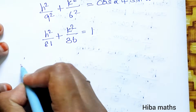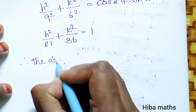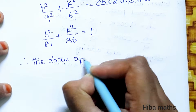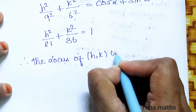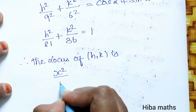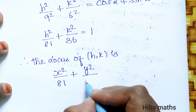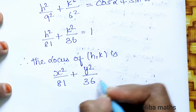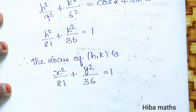Therefore, the locus of P(H, K) is x squared by 81 plus y squared by 36 equals 1. Understand? Thank you so much for watching.